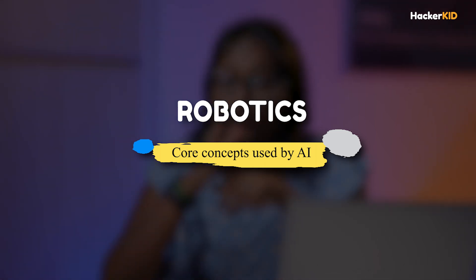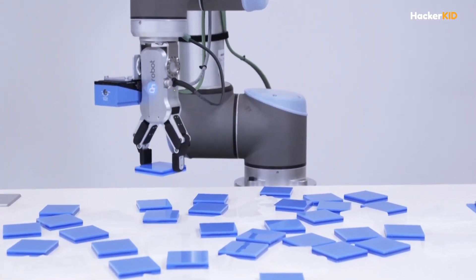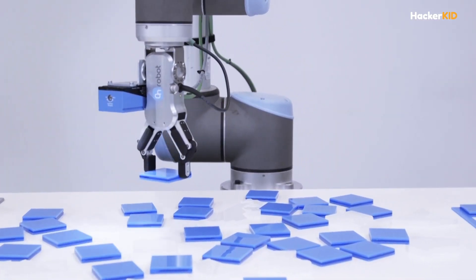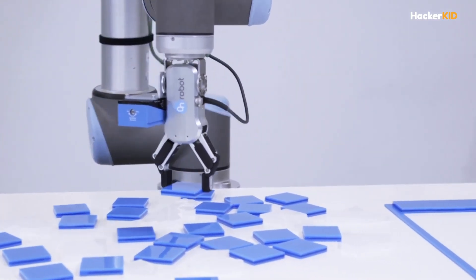Next is robotics. AI makes robots really smart. It helps them do cool stuff such as sensing their surroundings, making decisions, and performing actions such as picking up objects and much more. It's like the future is here.